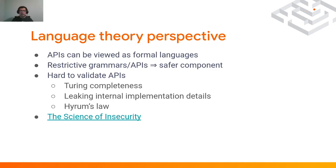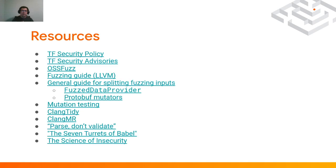APIs can be viewed as formal languages, where the strings the language accepts are the valid call orders a user could make. It is very hard to validate APIs because of Turing completeness and Hyrum's Law, which results from leaking implementation details, but it should be possible. For further reading, I would recommend the Science of Insecurity talk from a security conference. These are the resources from everything discussed in these slides. I can leave the floor now for questions. Thank you very much.